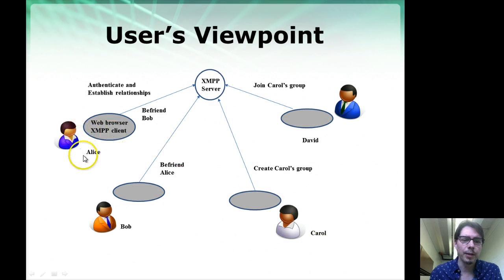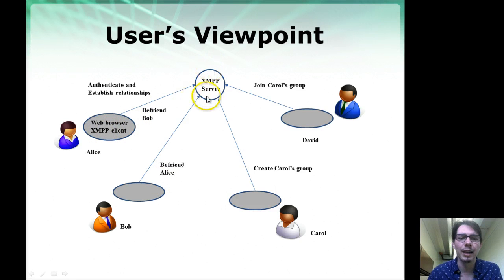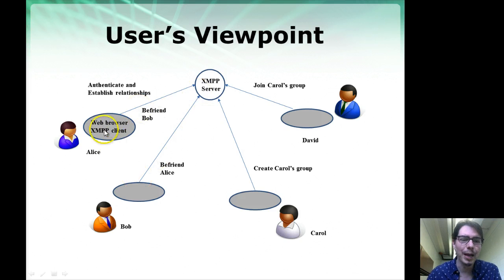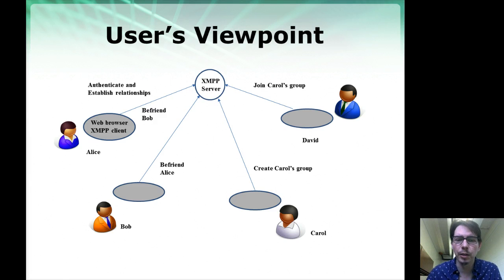If you have multiple users — say Alice, Bob, Karen, and David — on the XMPP server you perform operations that manage who connects to whom. Alice will use a web browser or XMPP client to befriend Bob, and Bob will also use a client to befriend Alice on the server. Once that's done, they can use the server to establish a VPN connection directly between them. Alternatively, groups can be created: Carol can create a group and David and other users may join, and these relationships are used to establish peer-to-peer connections between the computers that David and Carol own.